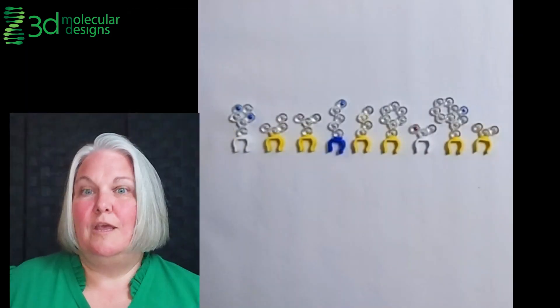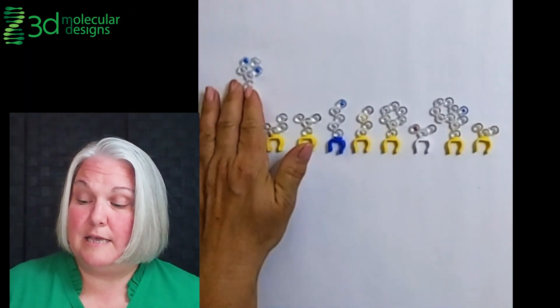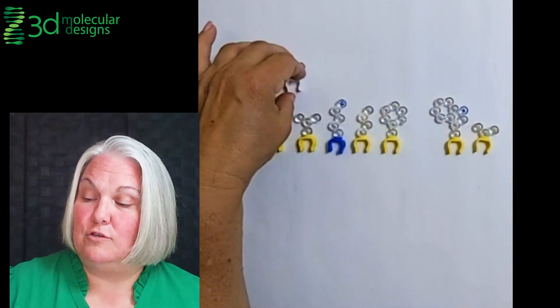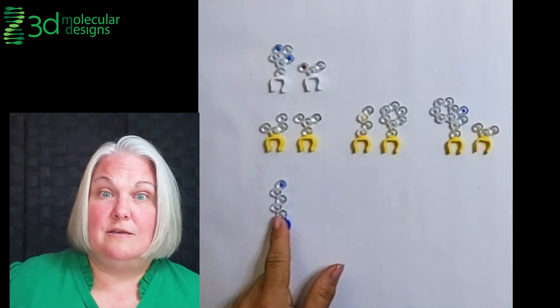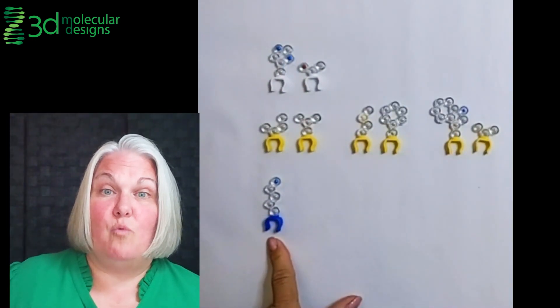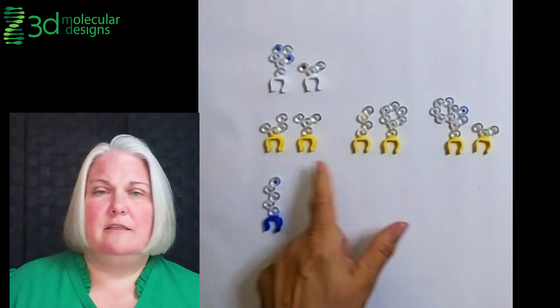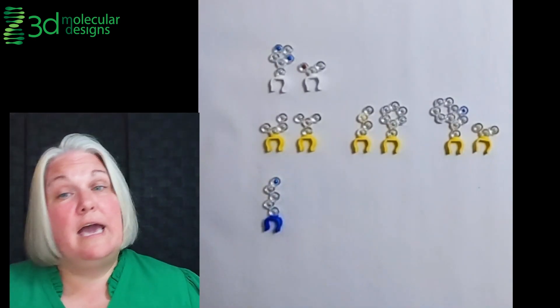Sometimes students want to further sort these by properties and they find that we have two hydrophilic amino acid side chains, we have one basic amino acid, and the rest of them are all hydrophobic.